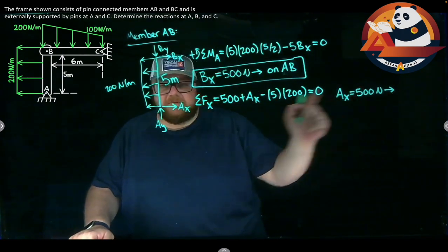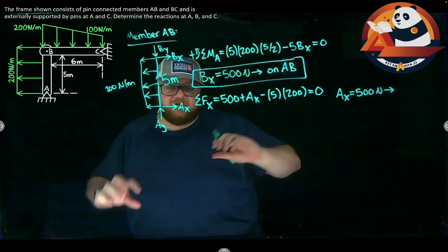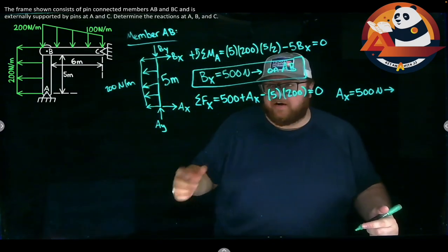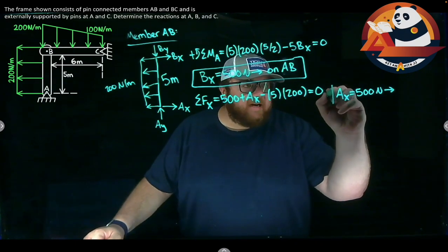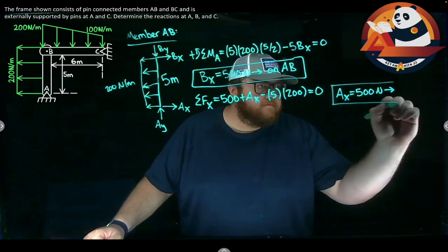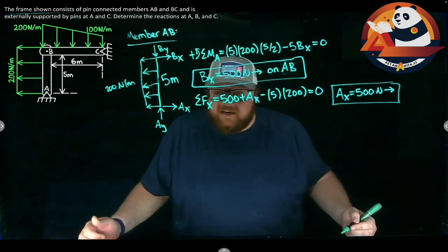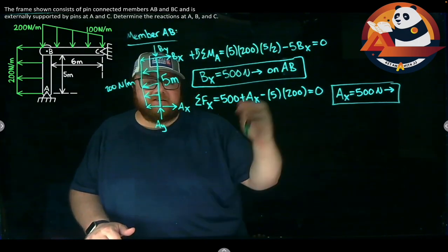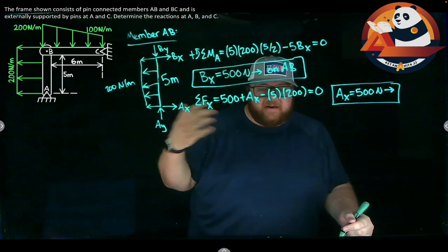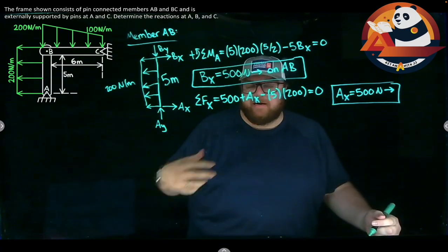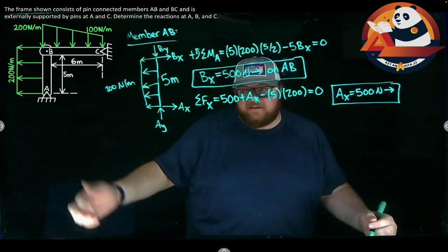And it's going to the right. I don't need to say on a specific member, because our support reactions, those external ones, we never change their direction around. Just 500 to the right. That would be my second answer. Technically, I can now move on. I can't do anything else in here. I can't sum force in the Y. I'd just be able to get AY minus BY is zero. AY equals BY. If I can't solve it out, let's just not deal with it.